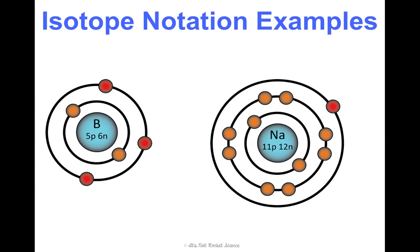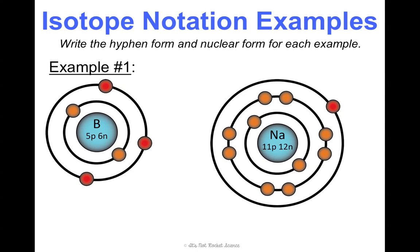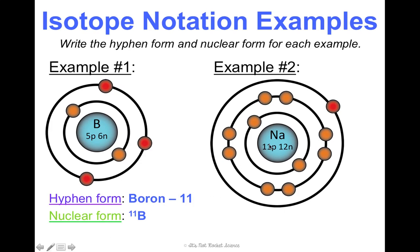Alright, let's try two examples. So, for each one, I want you to write the hyphen form and the nuclear form for each example. So, looking at this first one. This is boron. The B tells me it's boron. And, 5 plus 6 gives me a mass number of 11. To write that in nuclear form, that would be 11 and then the symbol, which is B. Alright, example two. Na stands for sodium. And, 11 plus 12 is 23. So, the hyphen form would be sodium hyphen 23. And, the nuclear would be 23 and then the symbol, Na.